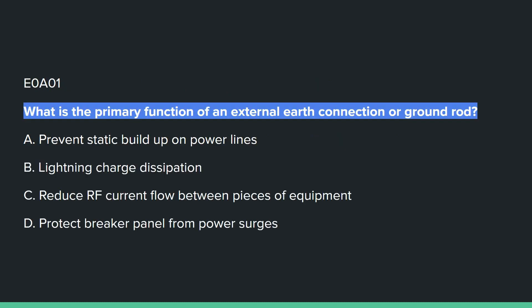E0A01: What is the primary function of an external earth connection or ground rod? B — lightning charge dissipation.